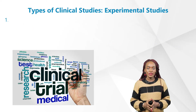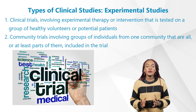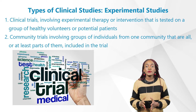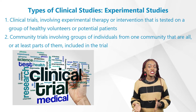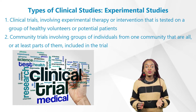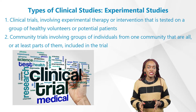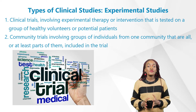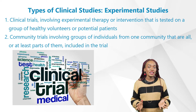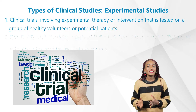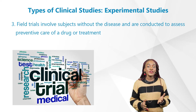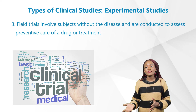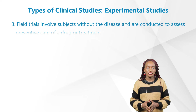There are different types of experimental study designs. First, clinical trials, involving experimental therapy or intervention tested on a group of healthy volunteers or potential patients. Second, community trials, involving a group of individuals from one community that are all or at least partly included in the trial. Lastly, field trials involve subjects without the disease and are conducted to assess preventive care of a drug or treatment.